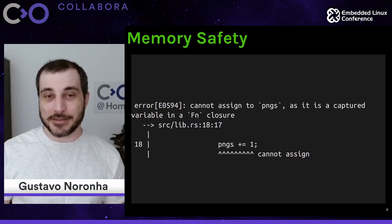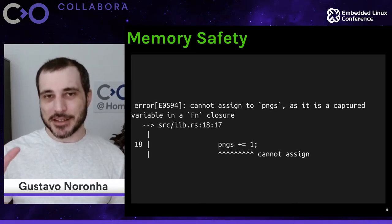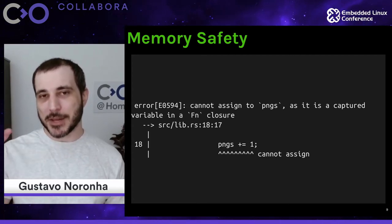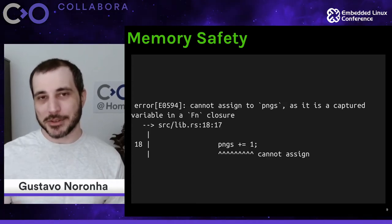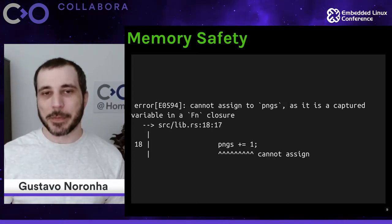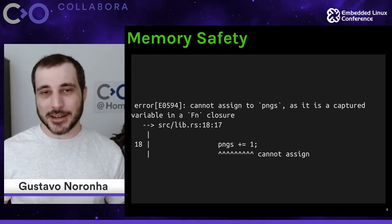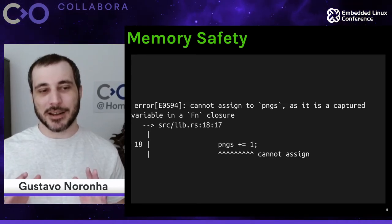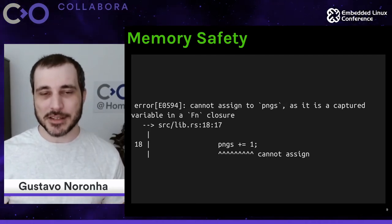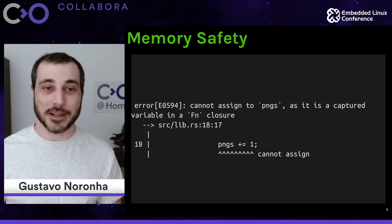Here's how Rust saves the day: this code simply does not compile. It knows this closure will be executed in parallel by several threads, so it knows that one of them must own PNGs and will tell you that you cannot touch this variable in another closure. While the error message could be better, it's not letting you commit an error that C, C++, Go, Python, or any other language would probably let you commit — you would have a data race and not even know about it.